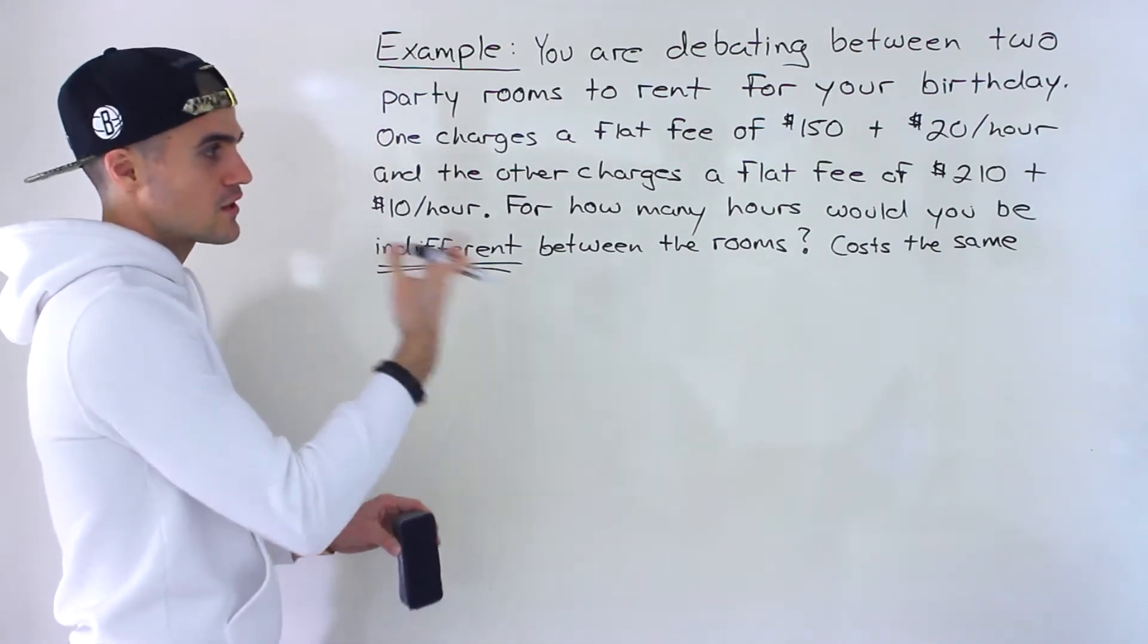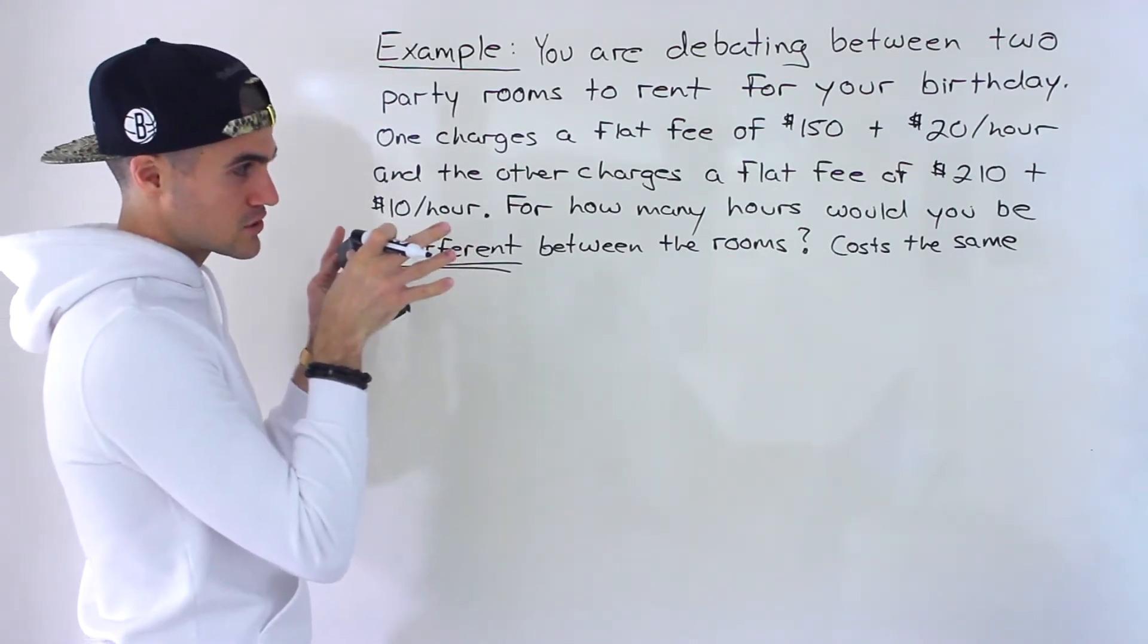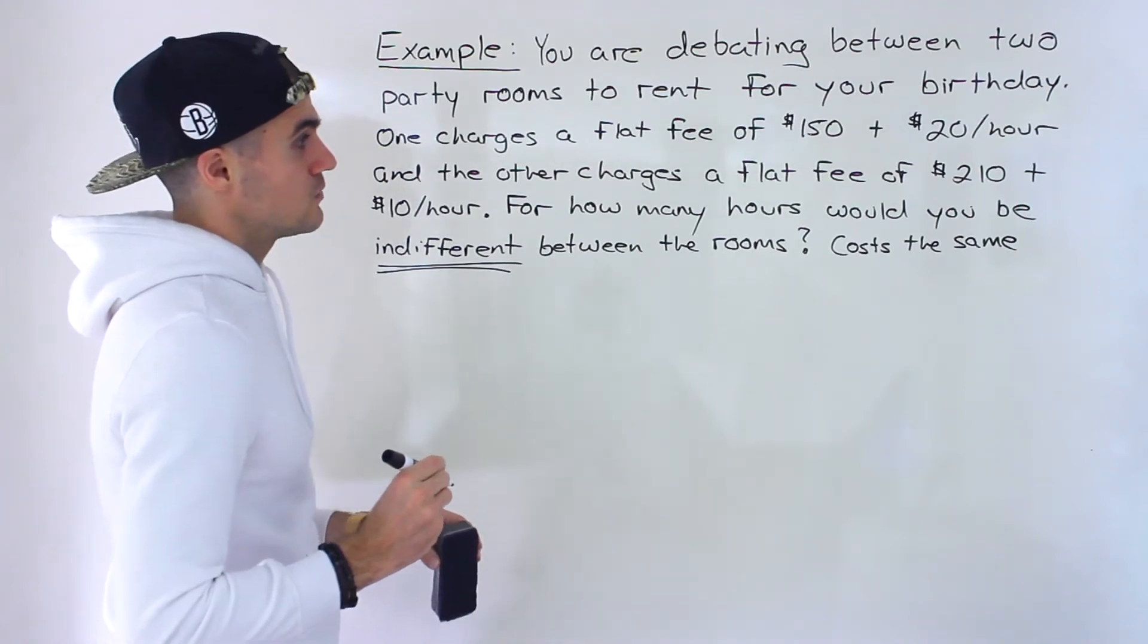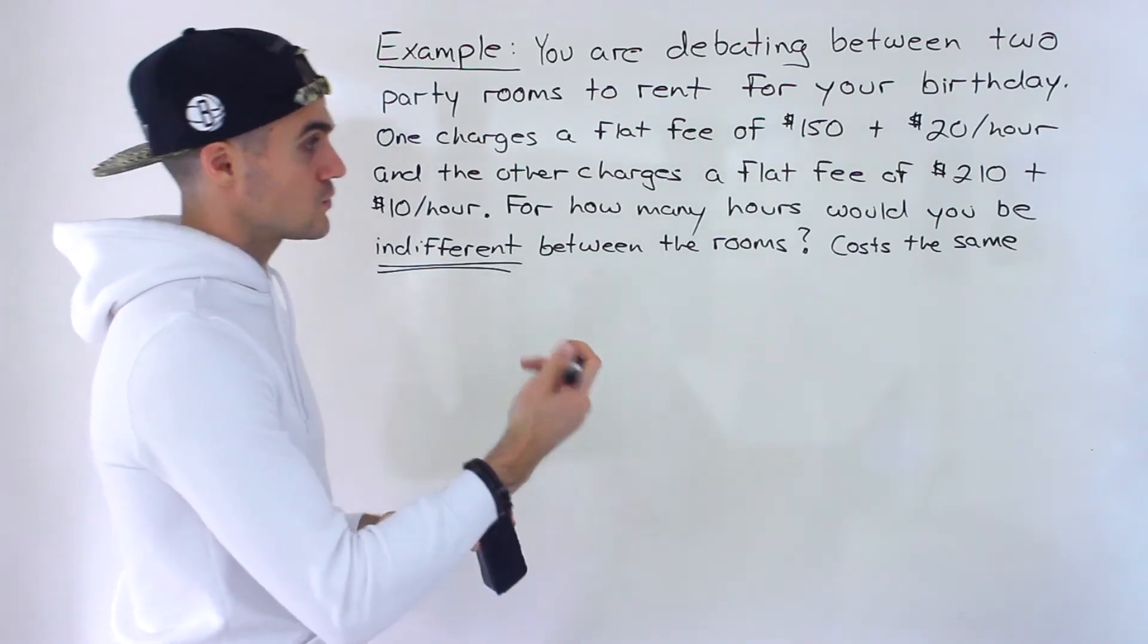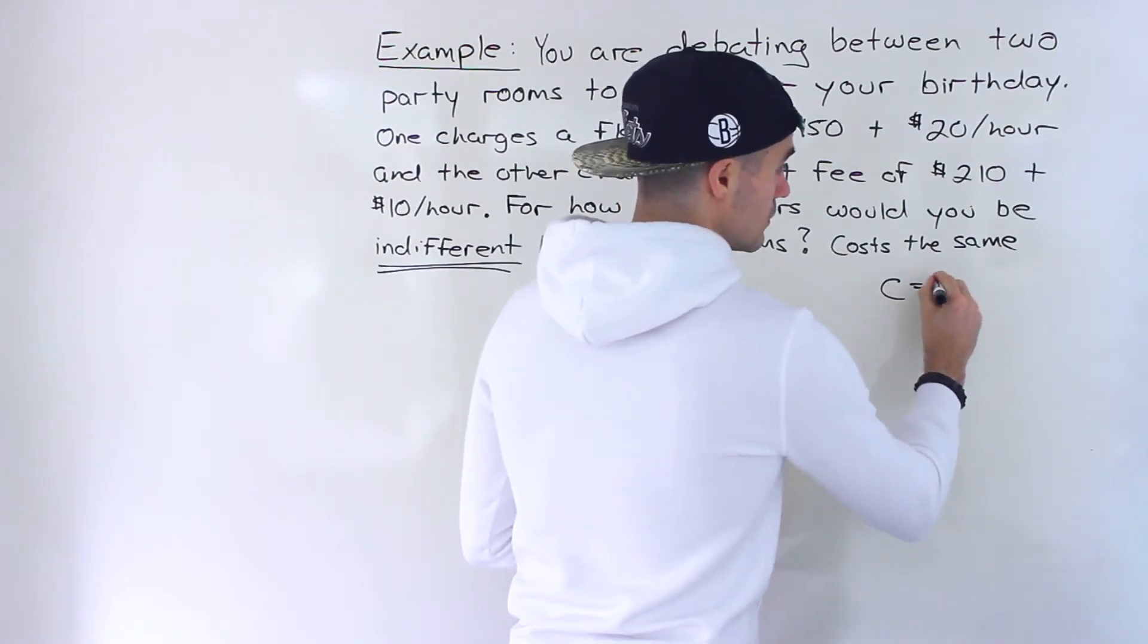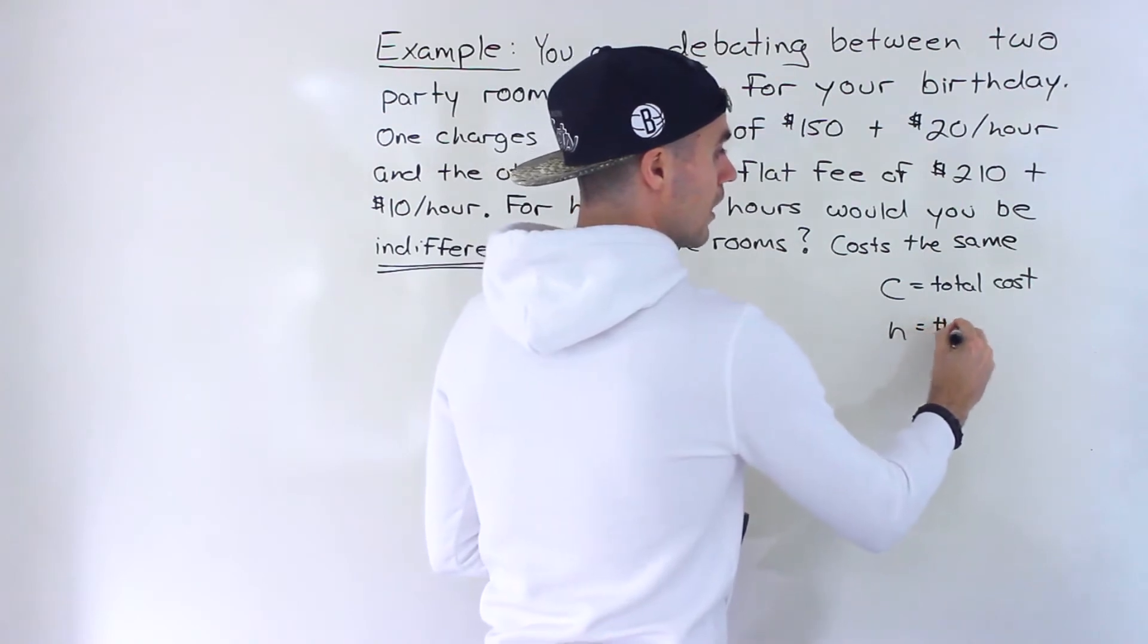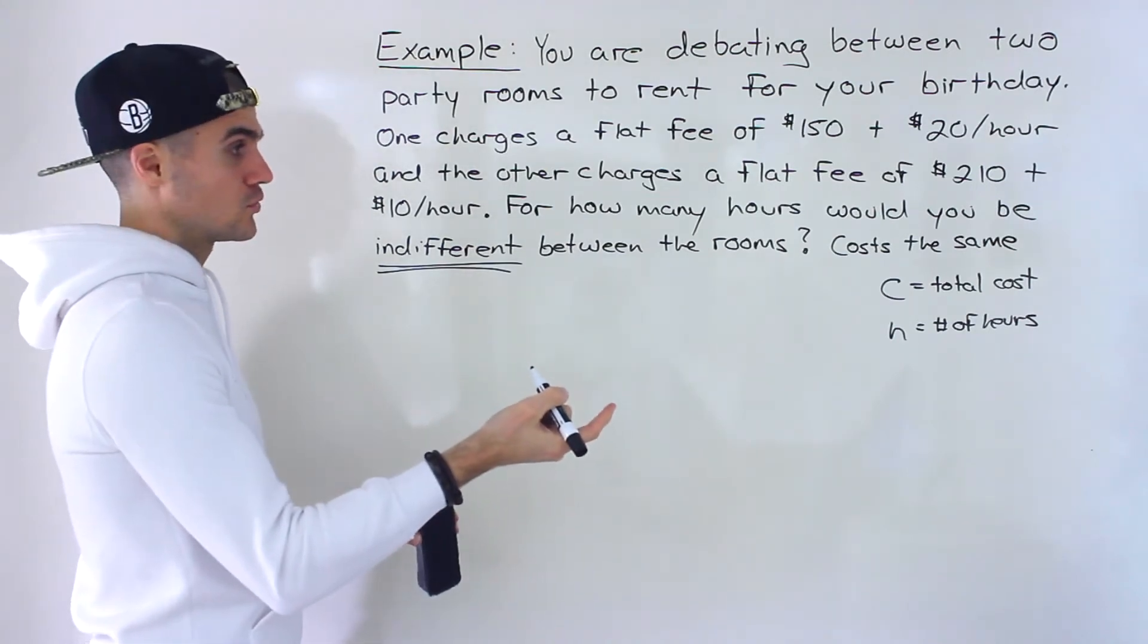Now being indifferent, obviously there's other factors like you may like one room versus the other, but in this particular example we're just strictly focusing on the costs. So we have to find out for how many hours would the cost of both rooms be the same. What we want to do is create algebraic expressions for both scenarios. I'm going to let c equal the total costs of the rooms, and then I'm going to let h equal the number of hours that you're renting the rooms for.